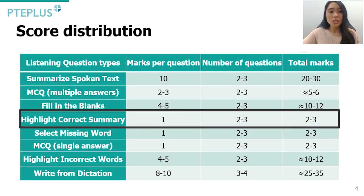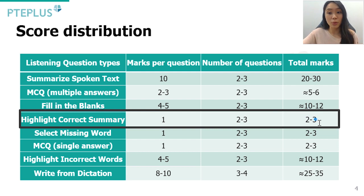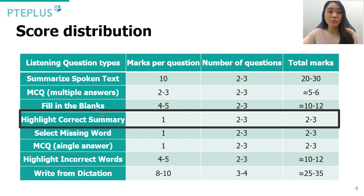Let's look at what these question types are worth and specifically how Highlight Correct Summary compares. Each HCS question is worth one mark and you will get two to three of them, so the total is two to three marks out of the entire listening section. Compare that to Summarize Spoken Text at 20 to 30 marks and Write from Dictation — these top two are worth 10 to 20 times more marks than Highlight Correct Summary.